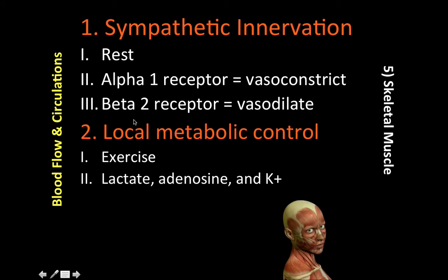The state of constriction of the skeletal muscle arterials is the major contributor to total peripheral resistance, or TPR. That's because of the large mass of skeletal muscles. The state of constriction of the skeletal muscle arterials is a major contributor to total peripheral resistance.